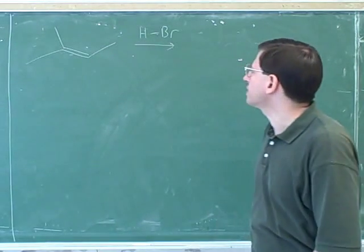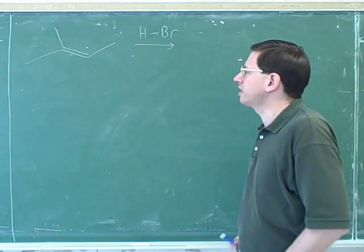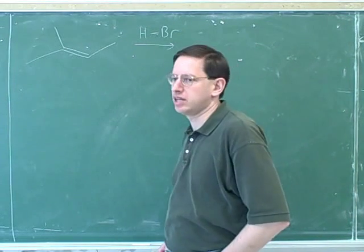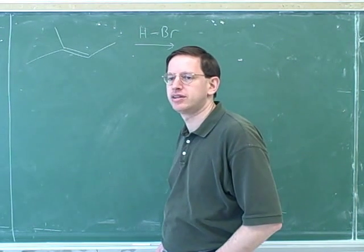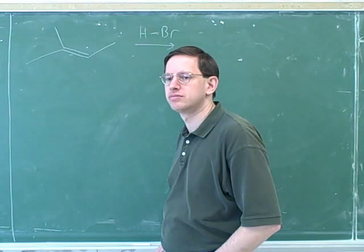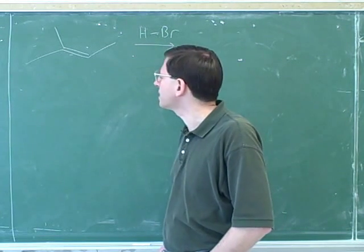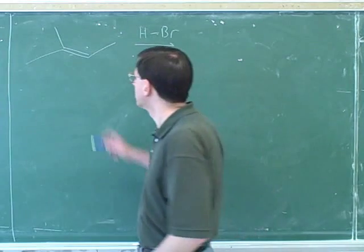Okay, so to start with, can you see anybody here who would be a good candidate for being at the head or the tail of an electron-pushing arrow? The double bond. Should that be at a head or a tail? Tail. Okay, good.